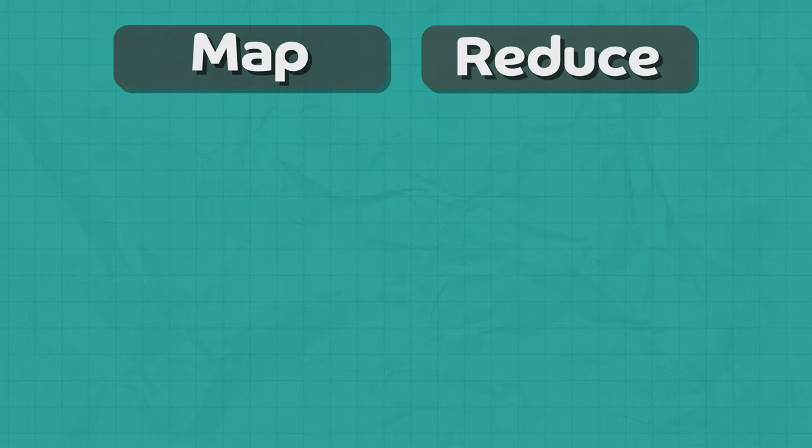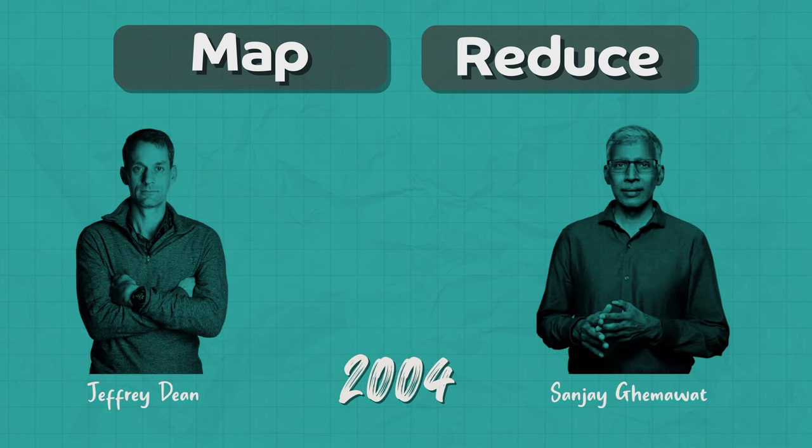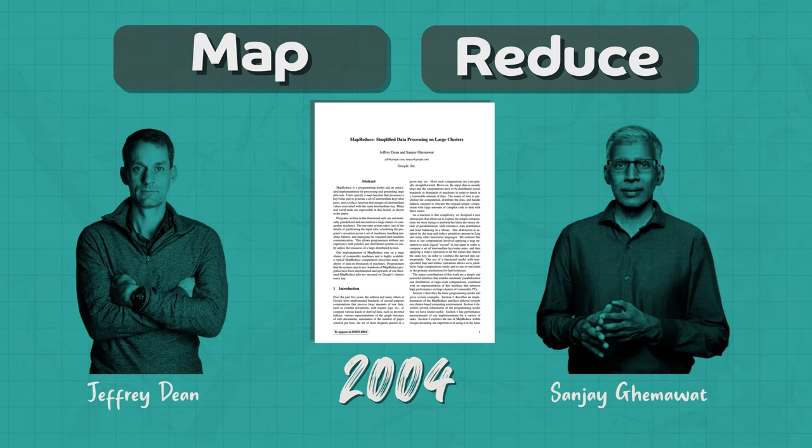This is where the MapReduce programming model comes to the rescue. Back in 2004, two Google engineers wrote a white paper on the MapReduce model, which allowed engineers to process very large data sets spread across hundreds or thousands of machines in a distributed setting, very efficiently in a fault-tolerant manner.